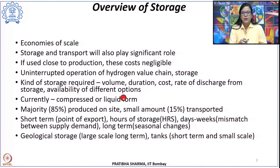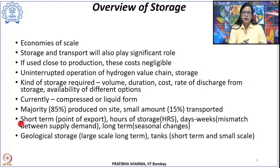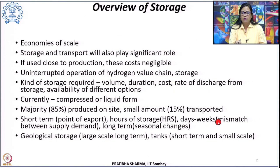For example, if we want very short-term storage at a point of export — at an export port where hydrogen will be shipped further — we require short-term storage. If we want to store it for hours, a typical example could be a hydrogen refueling station for vehicles. We may require days to weeks of storage to bridge the mismatch between supply and demand, or it could be large-scale long-term storage to bridge seasonal changes, combined with electricity or heat demand, providing system resilience.